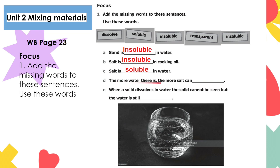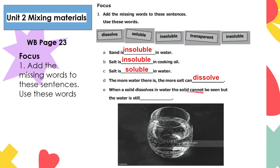Letter D: the more water there is, the more salt can dissolve, because most solids, including salt, become more soluble with increasing temperature. This is because heat increases molecular movement, causing more collisions between the water molecules and the solid. Letter E: when a solid dissolves in water, the solid cannot be seen, but the water is still transparent. It's still there but has mixed with the water to make a transparent liquid.